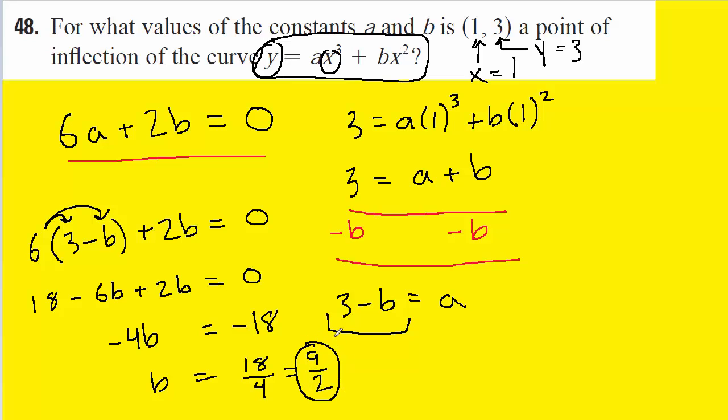Once we have the value for b solved we can then just simply plug that back into the equation that we had solved for a. And that will complete the solution. Finishing off here we have a equaling negative 3 halves. So we have the values for both a and for b, and that completes this question.